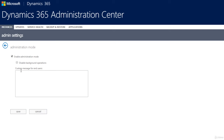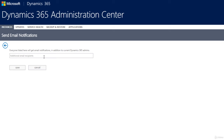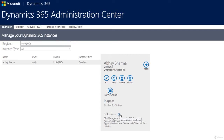If you want only administrators or customizers to log in, enable Administrative Mode and save. To allow all users again, simply uncheck it and save. You can also configure notifications — administrators receive notifications for new updates or instance issues, and you can add additional recipients by entering their email addresses separated by a semicolon.